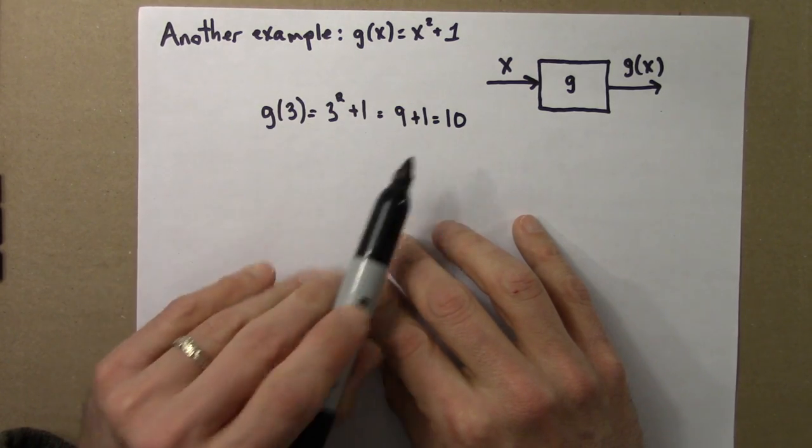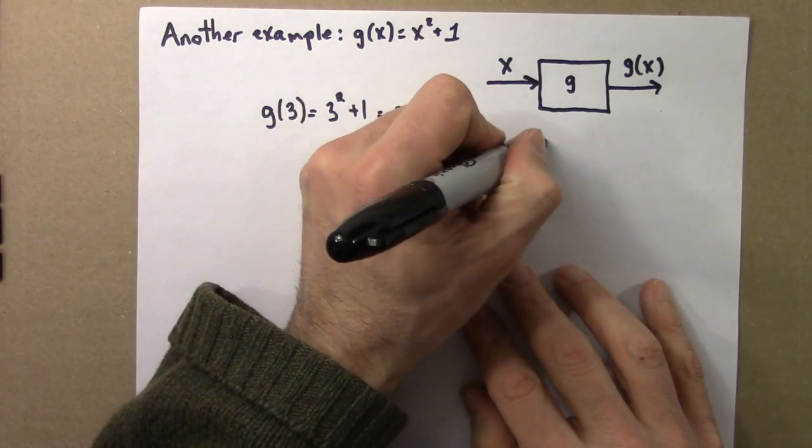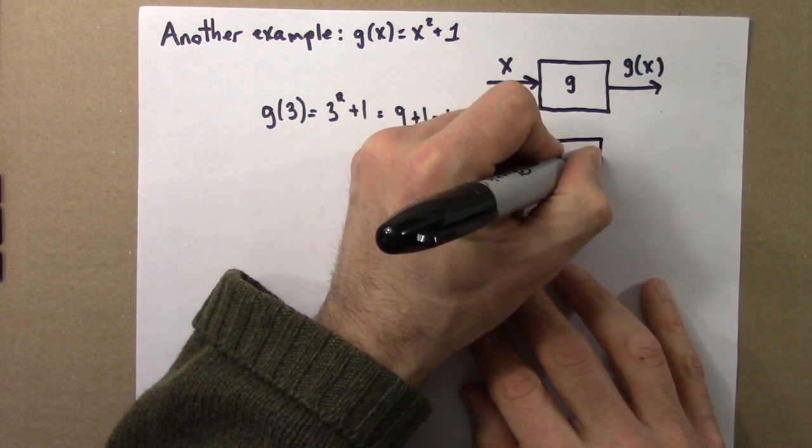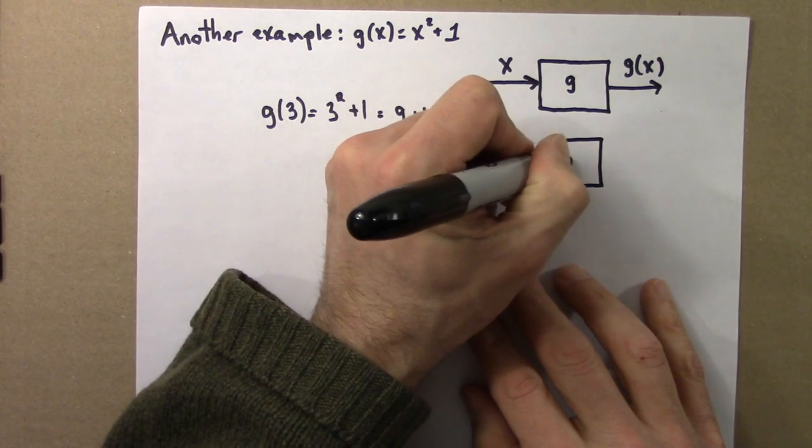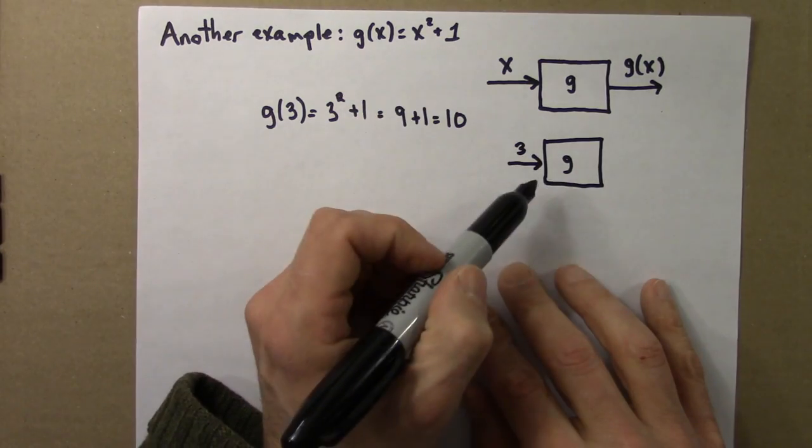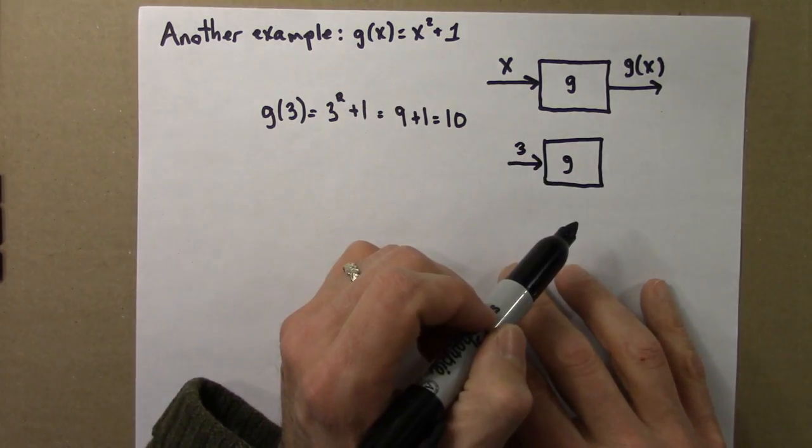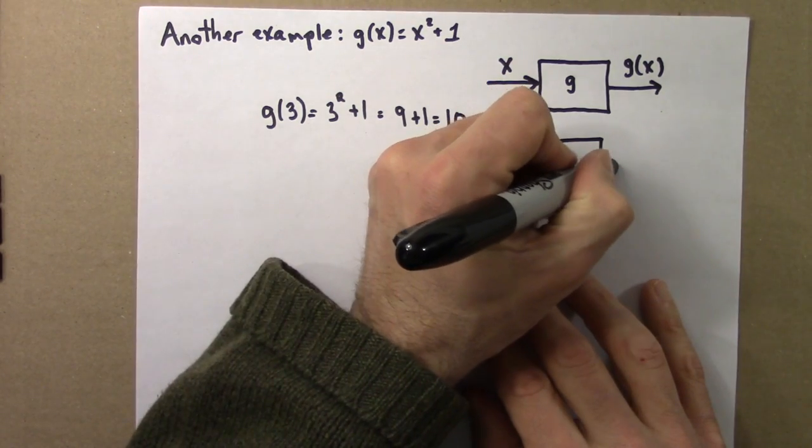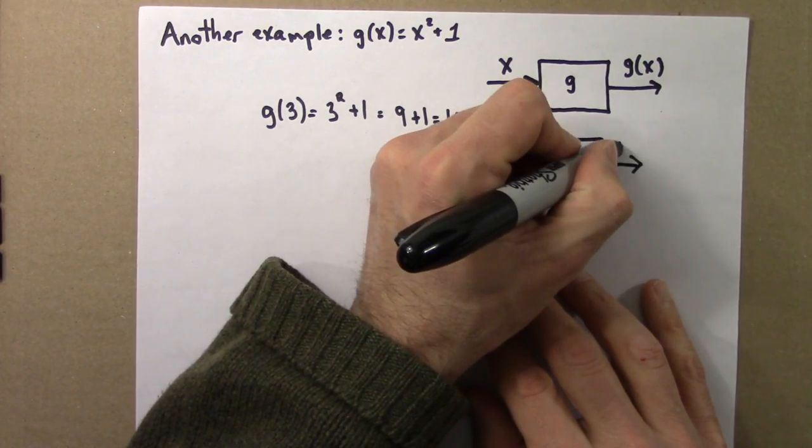So we would say that g of 3 is 10. We start with 3, g acts on it, we get 10. Using this notation, here's g. 3 comes in. Inside this box, 3 gets squared and then gets 1 added to it. So 10 comes out.